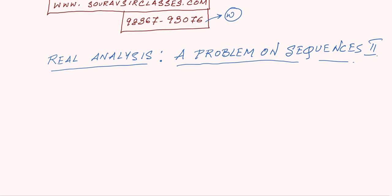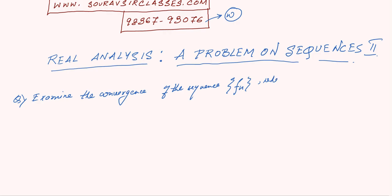Let's get ready for this problem — it will be a little tricky but we'll try to solve it. Examine the convergence of the sequence f_n, where f_n is equal to 1 plus 1 by 1 factorial plus 1 by 2 factorial plus dot dot dot plus 1 by n factorial. Is this convergent? Can we prove convergence by any other way?